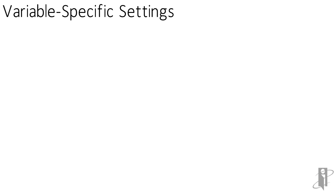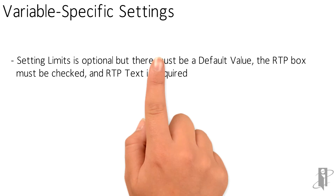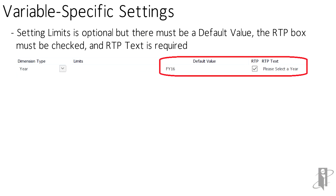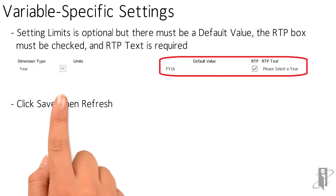There are a few other variable settings. Limits can be set to limit the valid member choices for the variable — this is an optional setting. However, a default value must be entered, the RTB box must be checked on, and the RTP text must be provided.